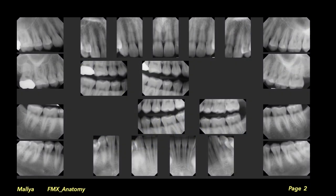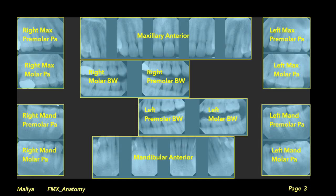This image demonstrates the layout of a full mouth radiographic examination that we use at UCLA. Make sure that you are familiar with the location of the periapical and the bite-wing projections and the locations of the radiographs from the various anatomic sites.